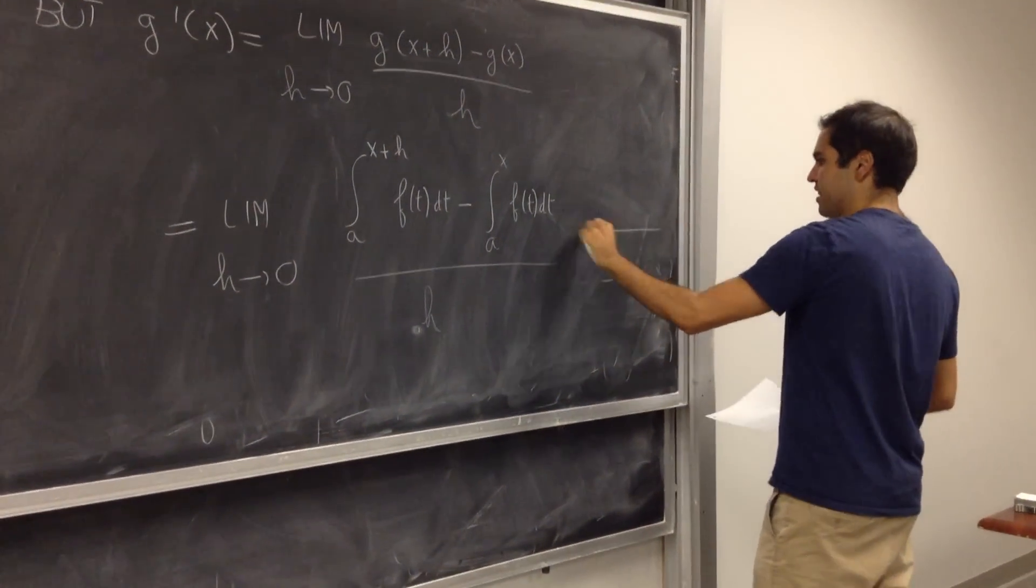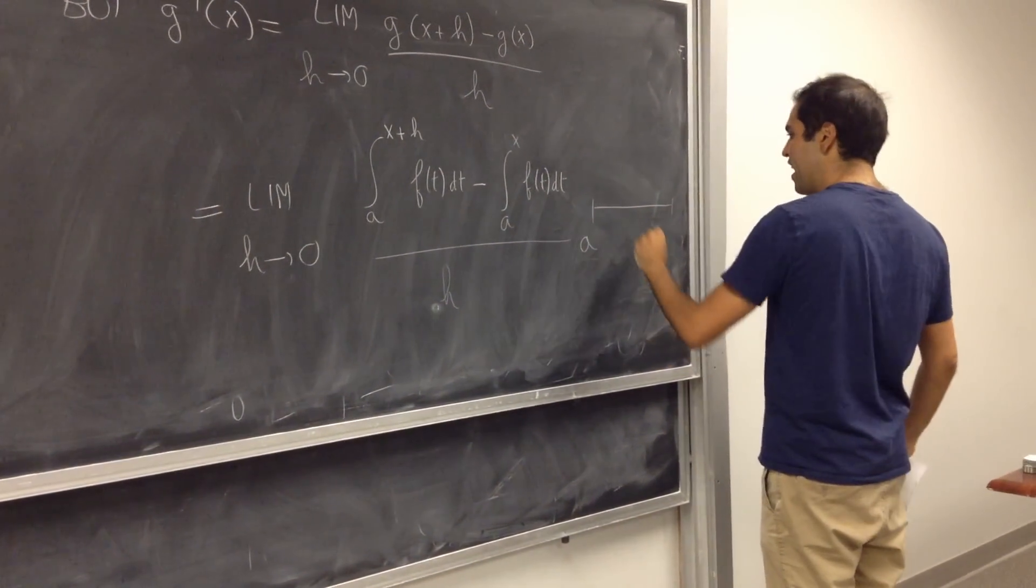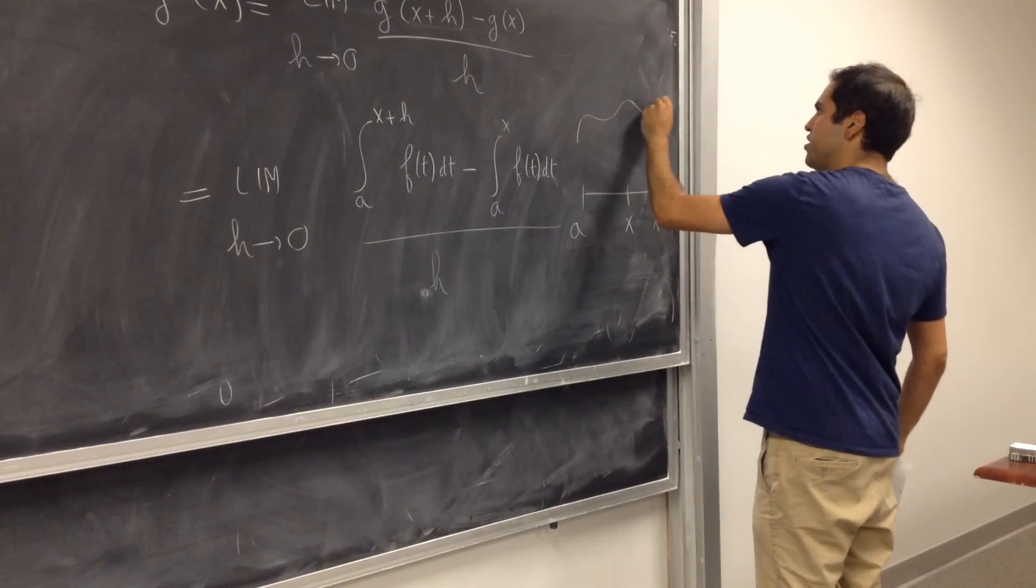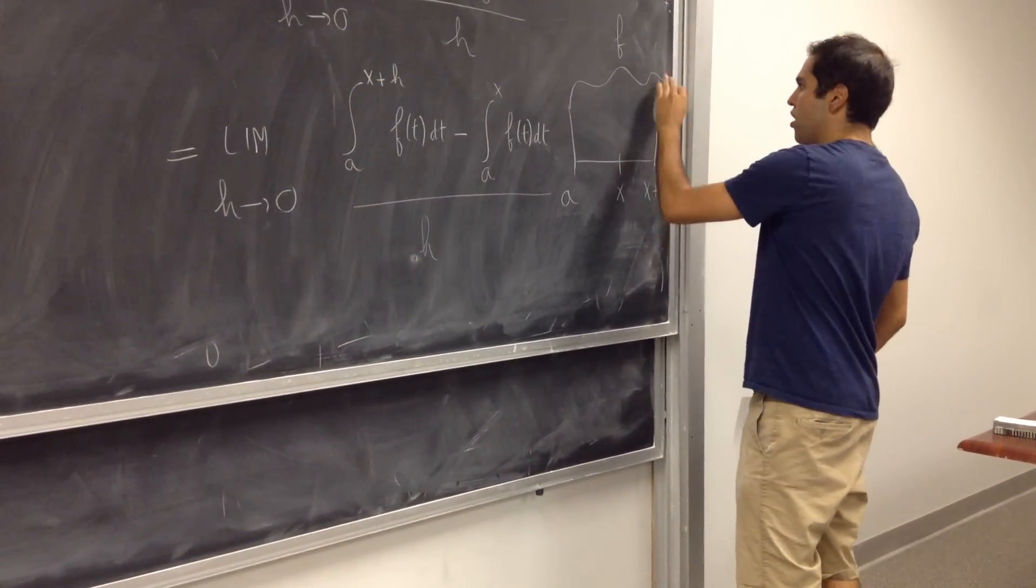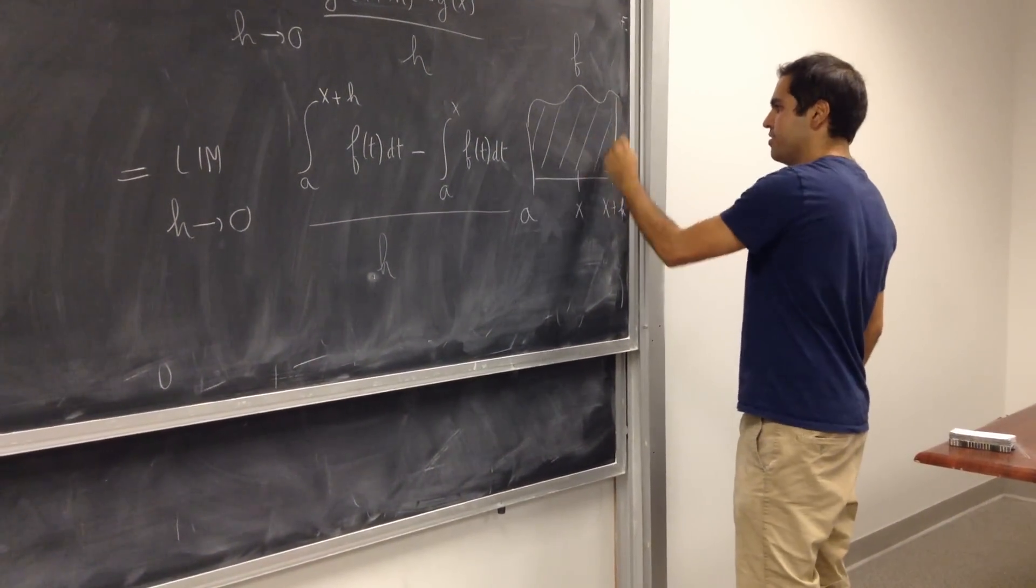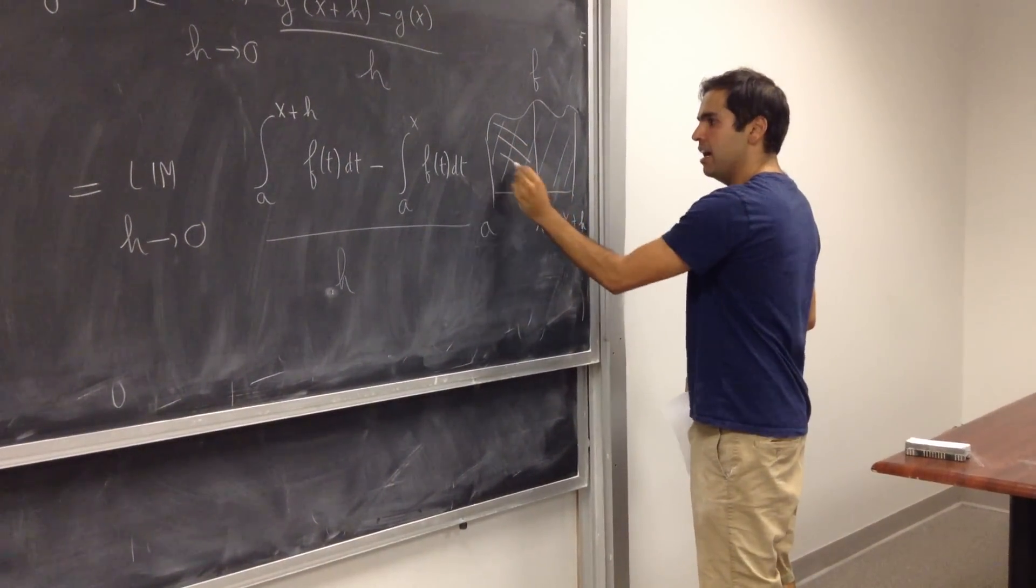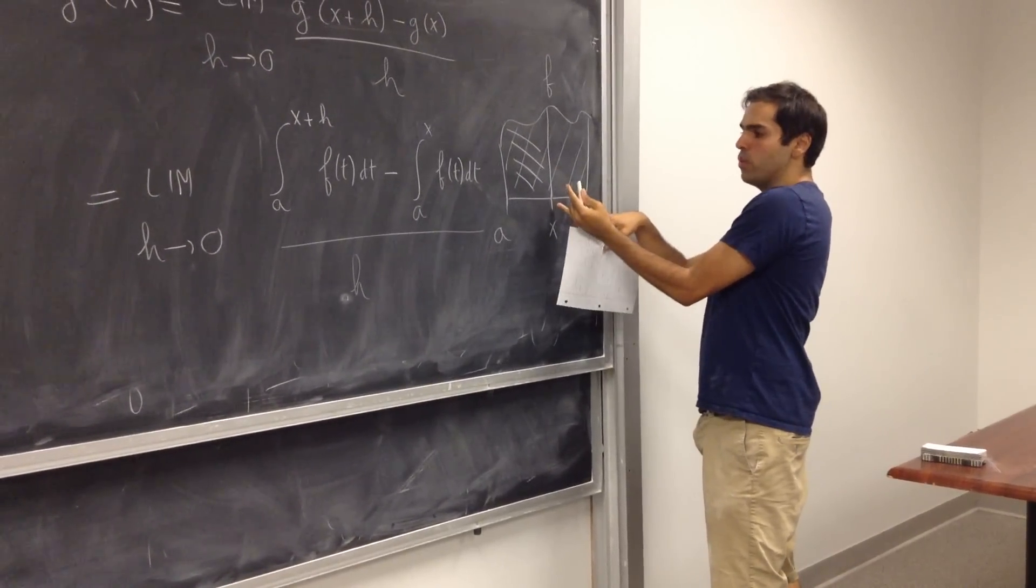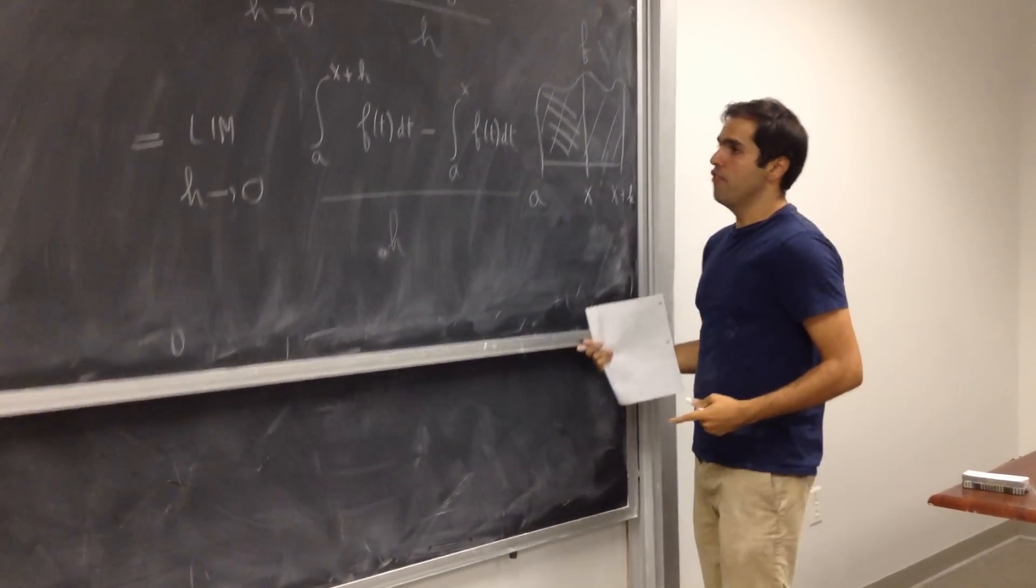So g of x plus h becomes integral from a to x plus h, f of t dt, minus integral from a to x of f of t dt, divide this all by h. What does this represent? And assume for the moment that x and h are positive.